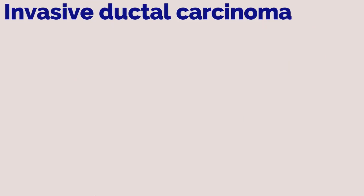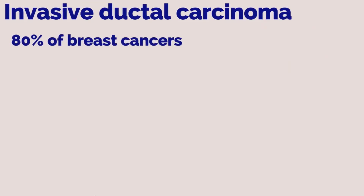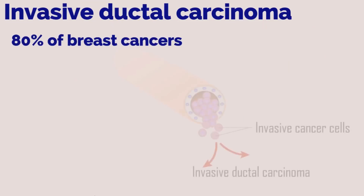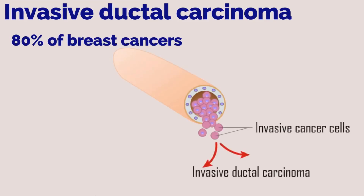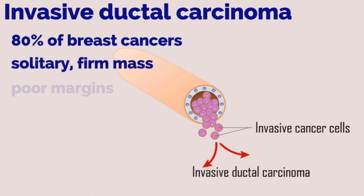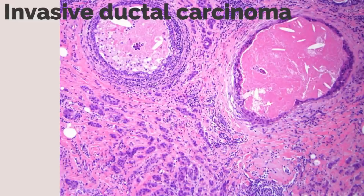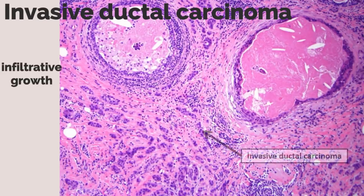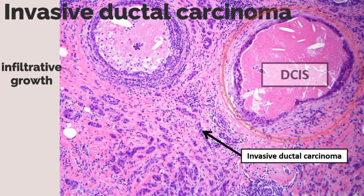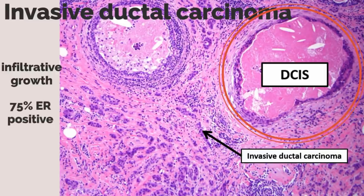Invasive ductal carcinoma accounts for 80% of all breast cancers; neoplastic cells invade the basement membrane. There is usually a solitary firm mass with poorly defined margins. Histologically, it is an infiltrative growth — invasive cells often form ducts or clusters. They are often found with background DCIS, and 75% are ER positive.